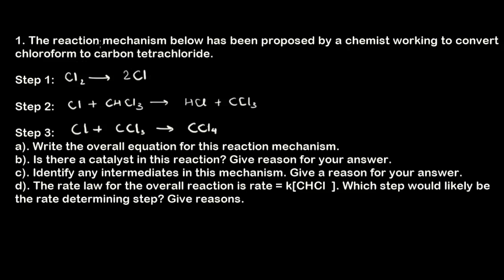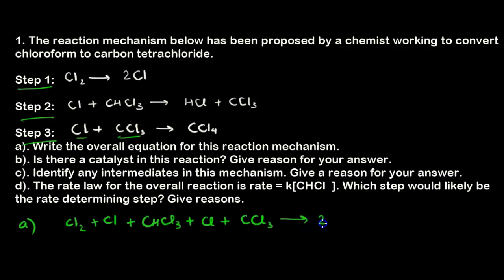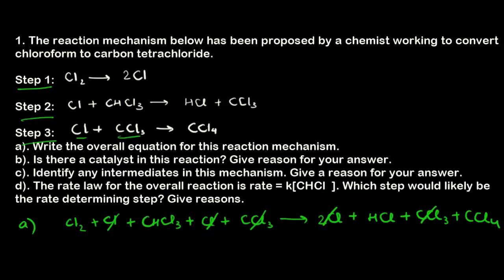Now let's work through a practice problem. A chemist proposes a three-step mechanism to convert chloroform (CHCl₃) to carbon tetrachloride (CCl₄). Part A asks for the overall equation. We add all left sides together and all right sides together: Cl₂ + Cl + CHCl₃ + Cl + CCl₃ → 2Cl + HCl + CCl₃ + CCl₄. Cancelling CCl₃ and 2Cl from both sides gives the overall reaction: CHCl₃ + Cl₂ → HCl + CCl₄.